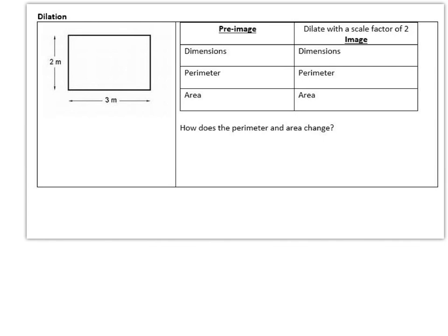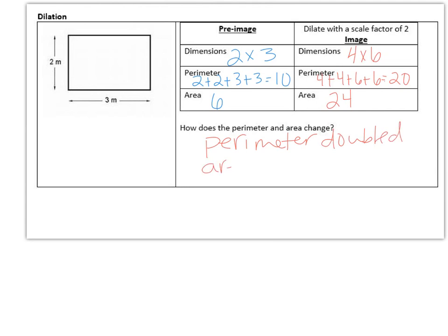Next one dilations so we've got a rectangle here and the dimensions of our original rectangle are 2 by 3 the perimeter would be 2 plus 2 plus 3 plus 3 which equals 10 and then the area would be length times width which equals 6. Now if we dilated it with a scale factor of 2 that means our dimensions would double so it would be 4 by 6 which means the perimeter would be 4 plus 4 plus 6 plus 6 which would equal 20 and then the area would be 4 times 6 length times width which would be 24. So the perimeter changed because it doubled and then the area changed because it quadrupled it got multiplied by 4.